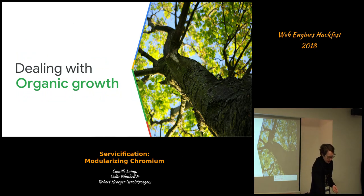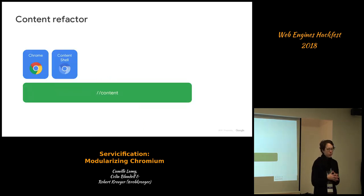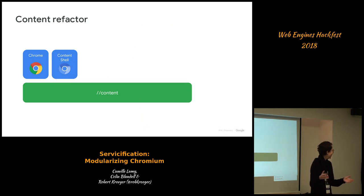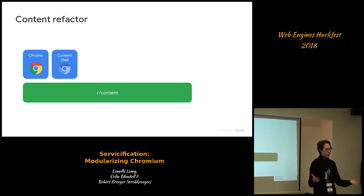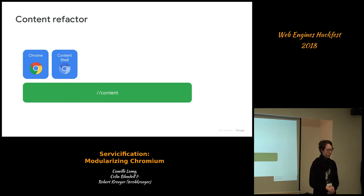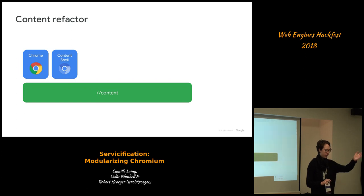To get there, we have to deal with what we have right now, which is basically organic growth. Chrome was not really over-designed. At one point, people realized they had this huge directory of features that wasn't handy to test or make changes to. So we did a thing called the content refactor. We defined a layer called content, which is the implementation of the web platform, and built stuff on top of that. The first two things were Chrome and content shell — a very simple thing that shows a tab implementing all web platform features.